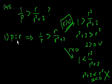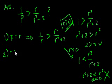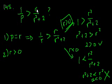So statement 1 alone isn't enough — we have to know whether or not r is greater than 0. Statement 2 says r is greater than 0. Statement 2 by itself isn't sufficient, because if you know r is greater than 0 but have no idea what p is, you can't answer it. But both statements combined are sufficient to answer this question.